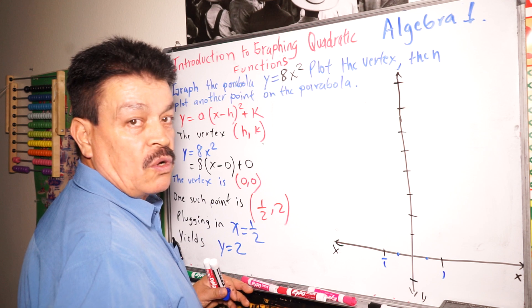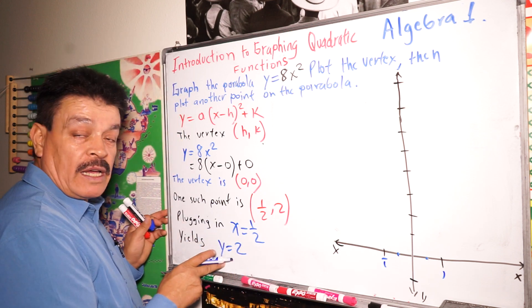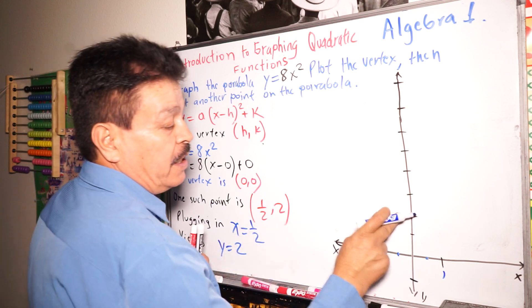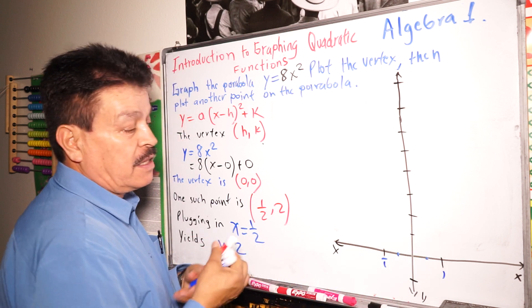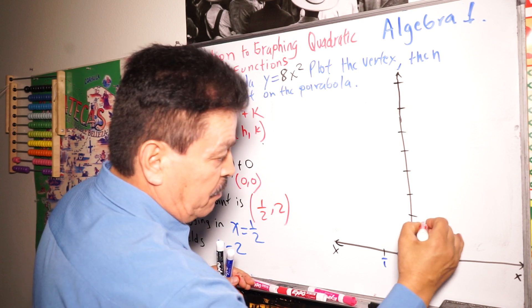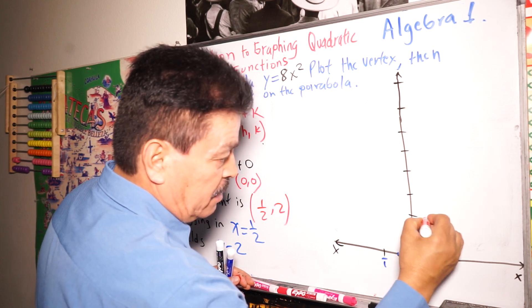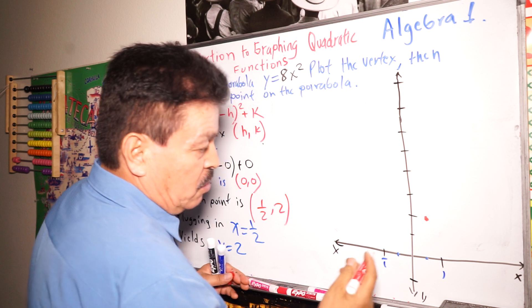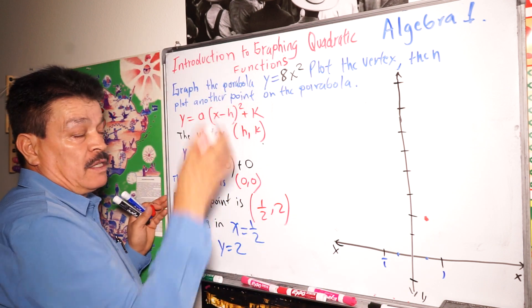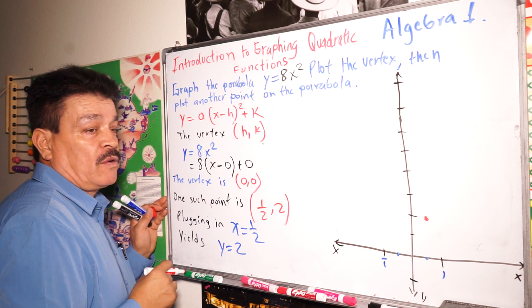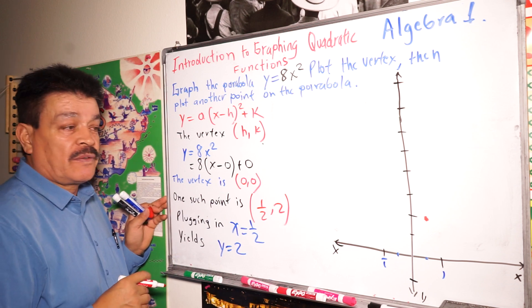How much is y? Y equals two. Right here is two. One, two. So just find that point. Find this point and you look for this point, so it's right here in the parabola. Remember, this parabola is open up. Why? Because a is greater than zero. Open up.